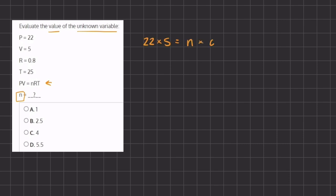On the left hand side we have 22 times 5 which gives us 110 equals n times 0.8. Instead of 0.8 we can convert it into a fraction so it's easier for us to solve, times 25. Now this 25 we can break up into 5 times 5.